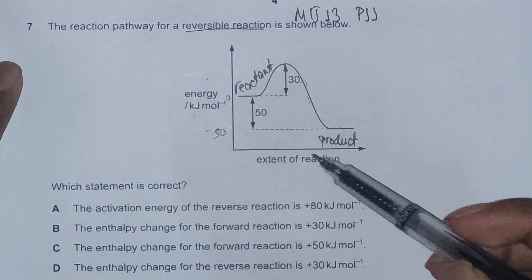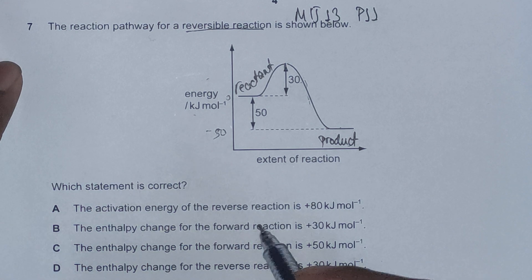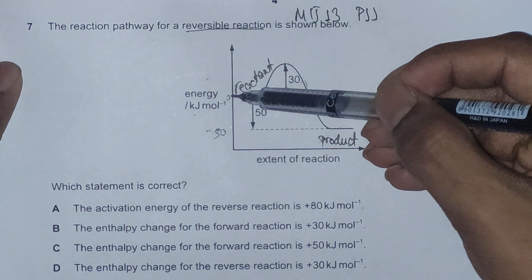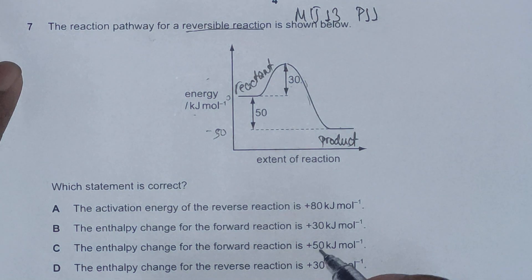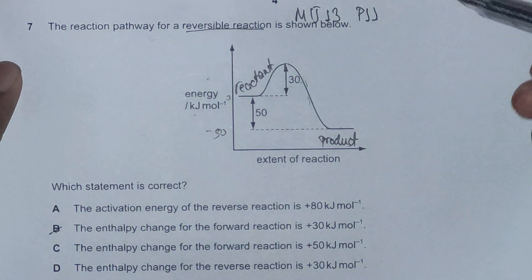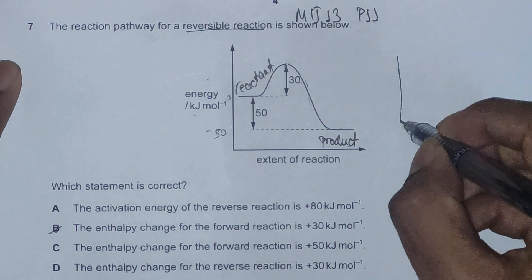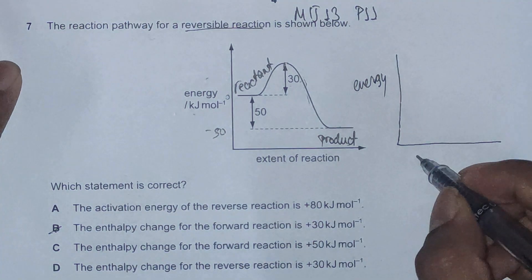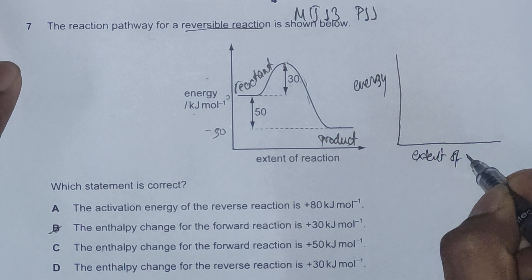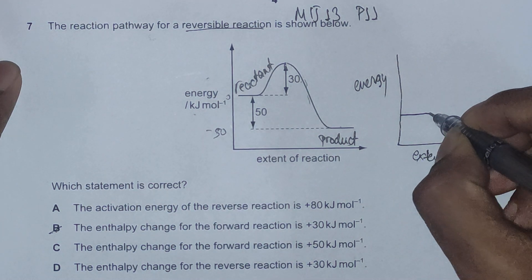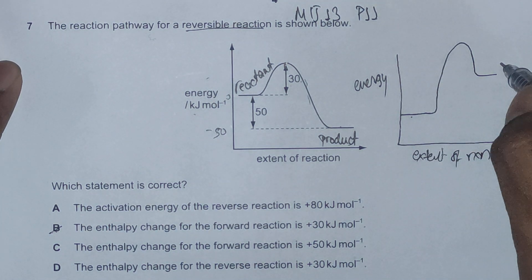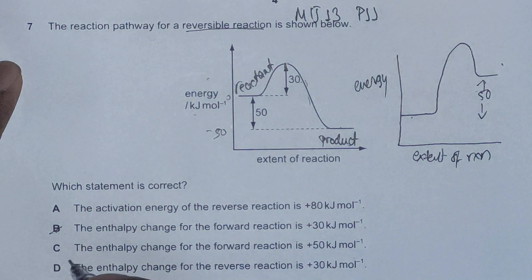Looking at the options for the forward reaction: option A states the enthalpy change is 30 kilojoules per mole — false, because the enthalpy change is negative 50 kilojoules per mole. Option B states the forward reaction enthalpy change is positive 50 — also false. Option C would be correct only if the diagram showed the reactant lower than the product, but in this diagram the enthalpy is negative 50, so we reject option C as well.